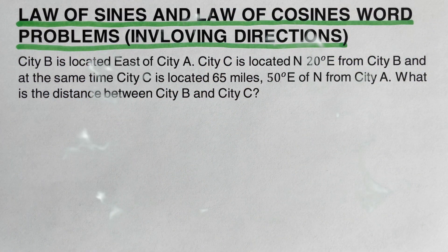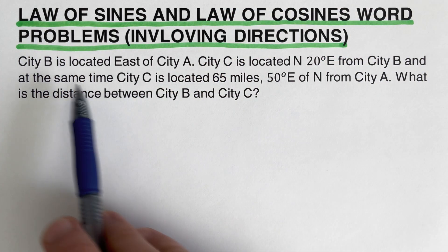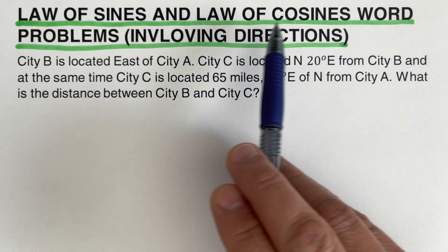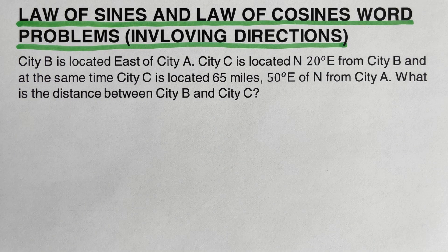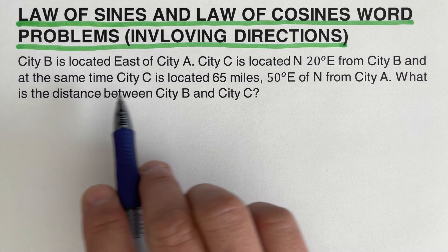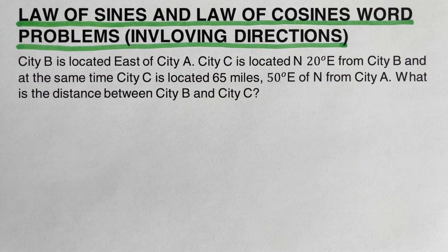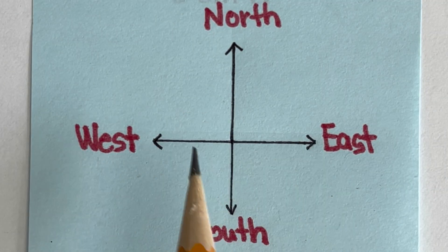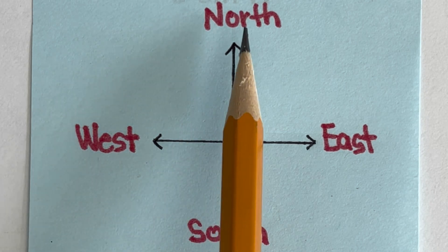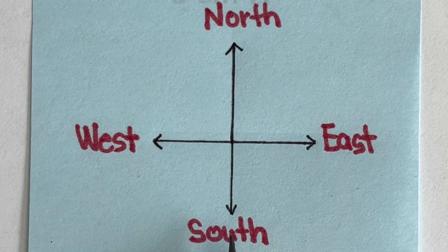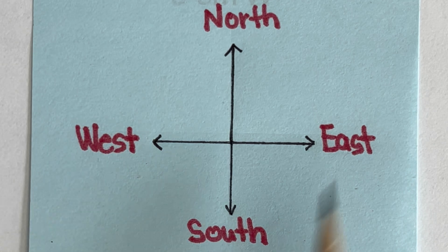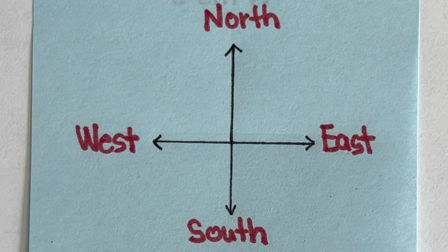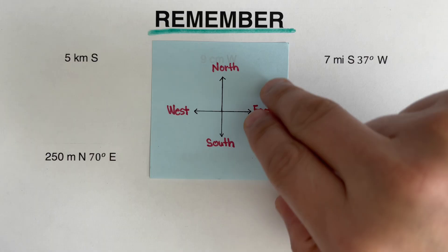Hello everyone. In this video we will be solving word problems on law of sines and law of cosines involving directions. Before we go over the examples, let's have a review on directions. Going to the right we assign as east, going to the left west, up north, down south. We're going to use this direction guide in drawing these examples.